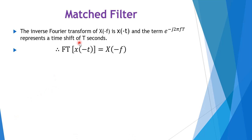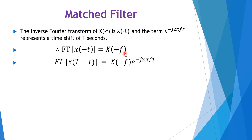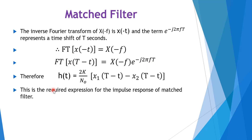Using this Fourier transform property, we can write h(t) = 2k/N0 times [x₁(t − T) − x₂(t − T)]. This is the required expression for the impulse response of a match filter.